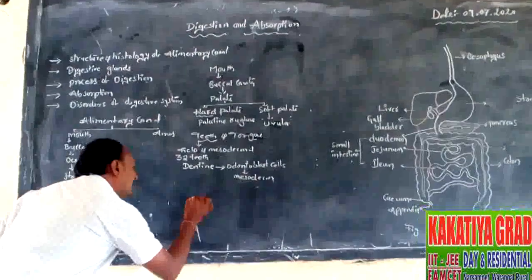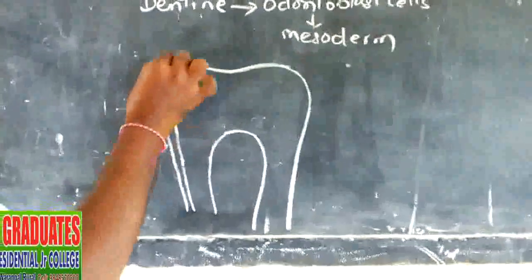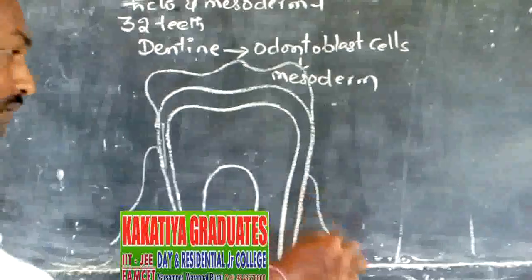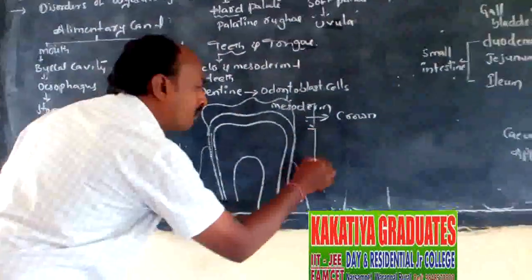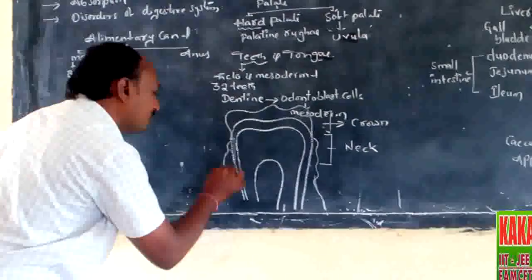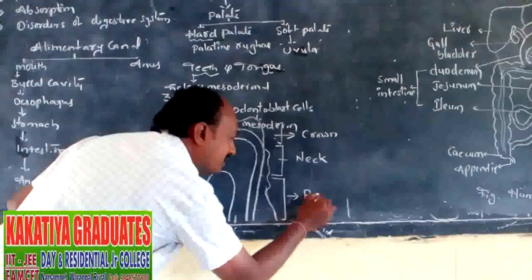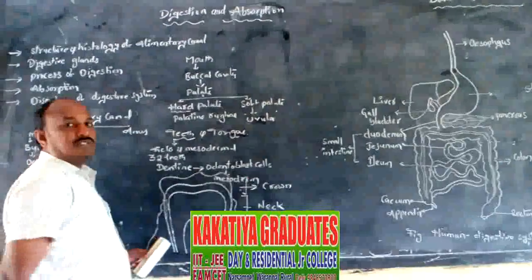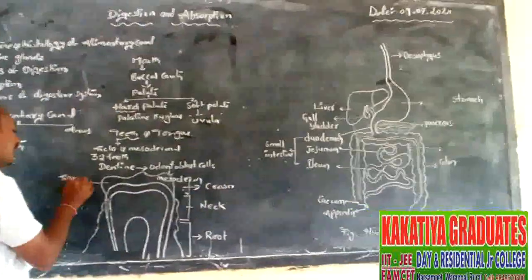The outer exposed part is called the crown. The middle part is called the neck, which is embedded with the gums. The basal part of the tooth is called the root, which is fixed at the socket of the jawbone.